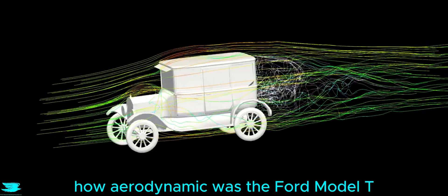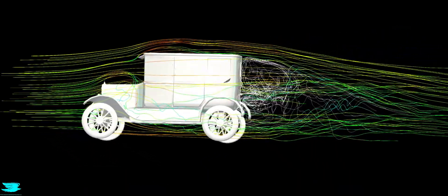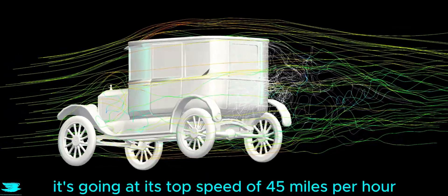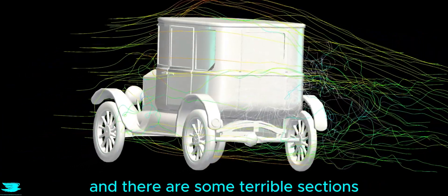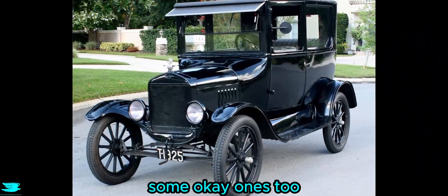How aerodynamic was the Ford Model T, the original car? Let's find out. It's going at its top speed of 45 miles per hour, and there are some terrible sections, but some okay ones too.